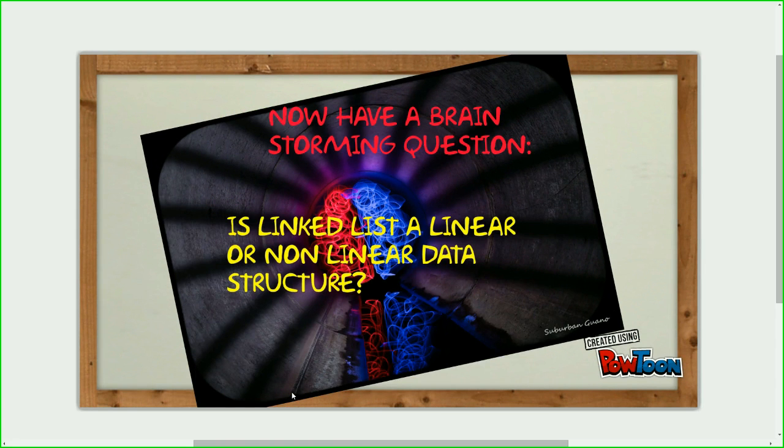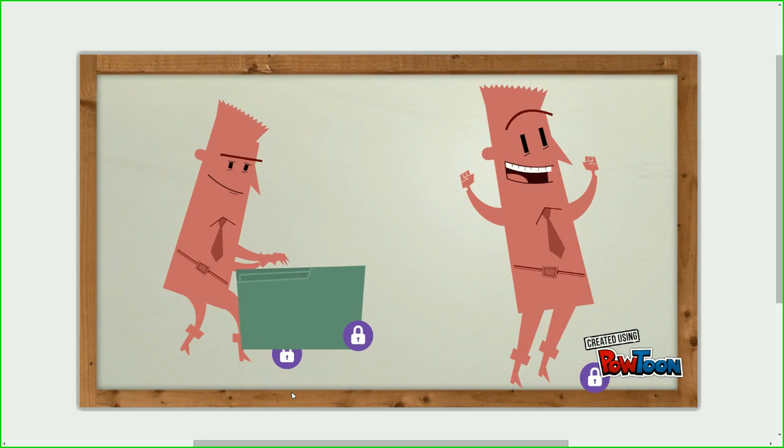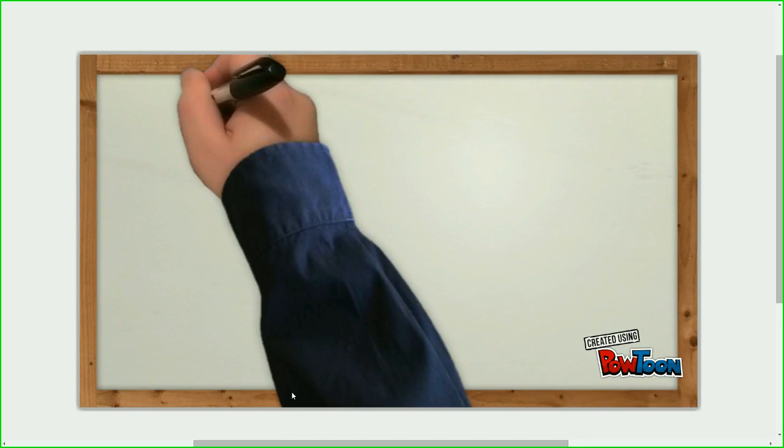Now, is linked list a linear or non-linear data structure? Parallel time, how many times can you subtract 5 from 25? Once only, because later it becomes 20. Back again.